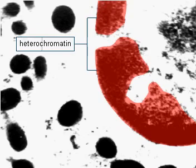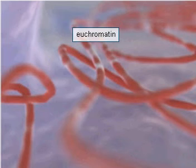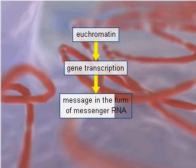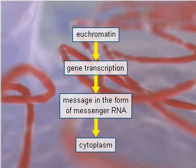Relatively densely packed chromatin fibers form heterochromatin. The loose structure of euchromatin enables it to be active — that is, to transcribe the genes into messages, which can then be sent to the cytoplasm — while the dense form of heterochromatin prevents this from happening.